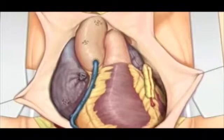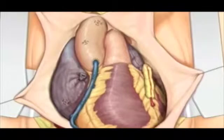Many patients, especially those with reduced ventricular compliance as occurs in ischemia, have a substantially reduced cardiac output in the absence of atrial contraction. For this reason, pacing wires on the right atrium are often also desirable.